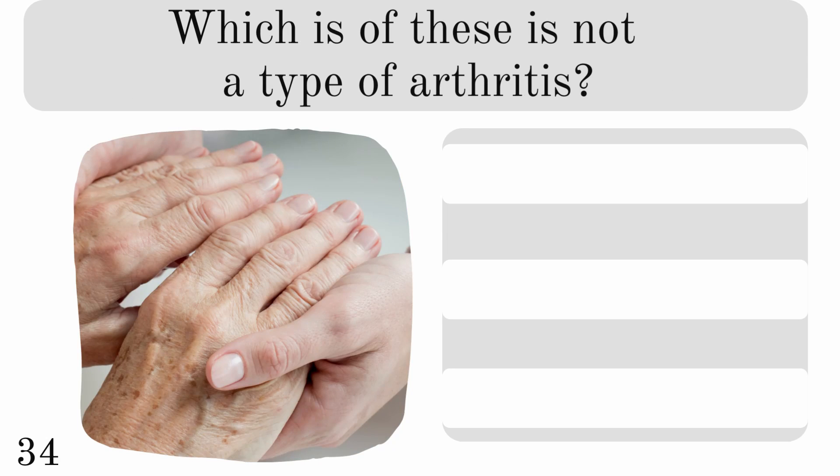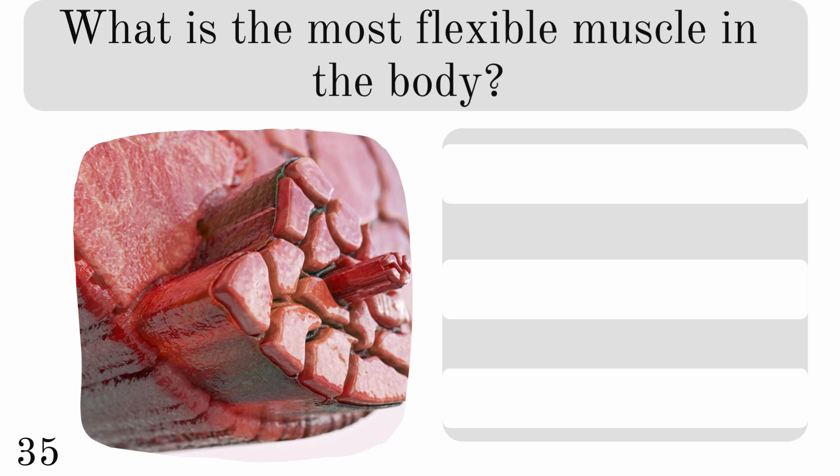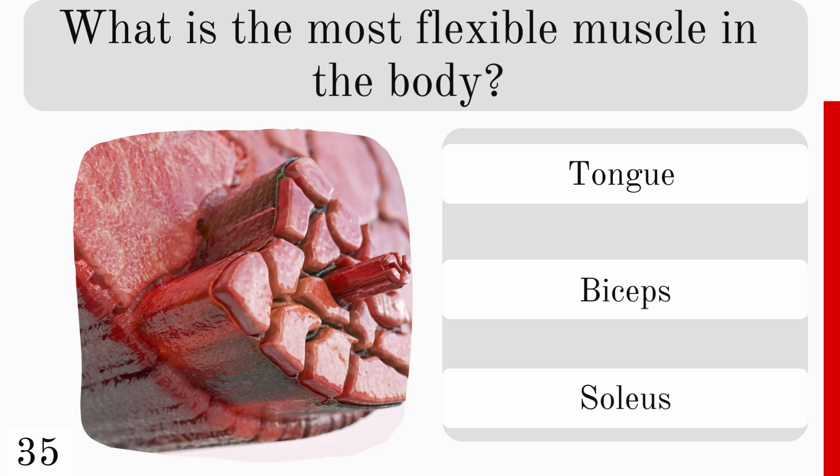Which of these is not a type of arthritis? Gout, lupus, or osteoporosis? And the answer is osteoporosis. What is the most flexible muscle in the body? The tongue, biceps, or soleus? And it is the tongue.